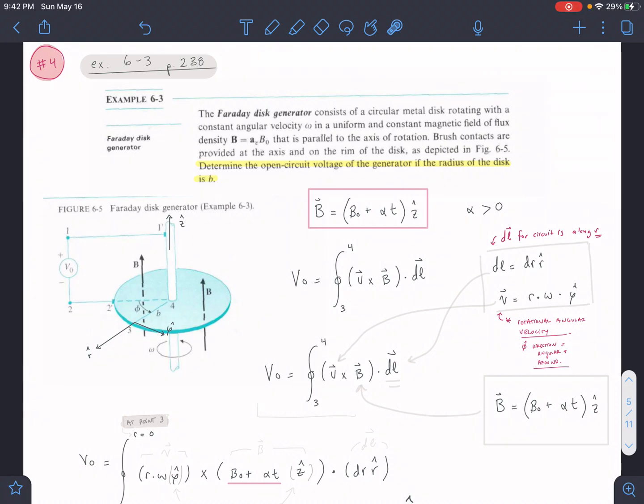Okay, for Example 6.3 we're looking at a Faraday disk generator. For this one we have a rotating disk that has an angular velocity ω and a magnetic field. For our homework problem we modeled a magnetic field changing with respect to time, so this is the only thing in this problem that's changing. Our B is equal to B naught plus some constant multiplied by time in the z-hat direction, so our B is pointing straight up here.